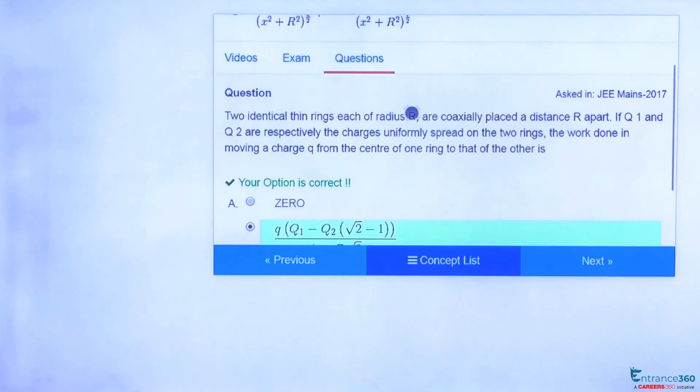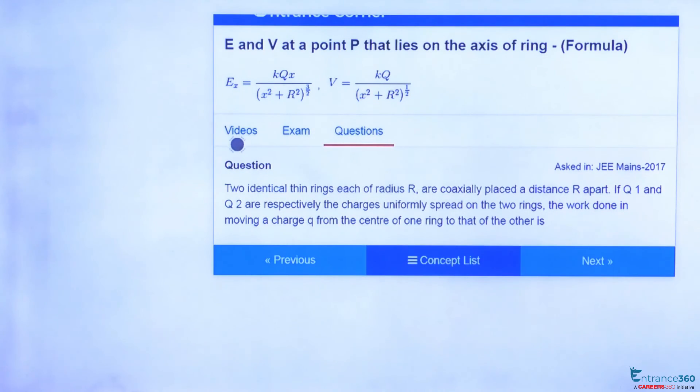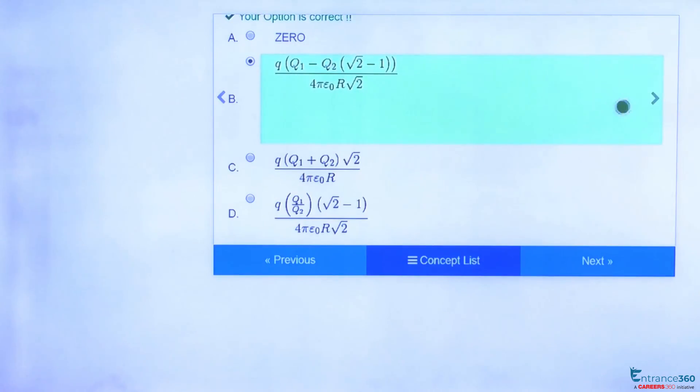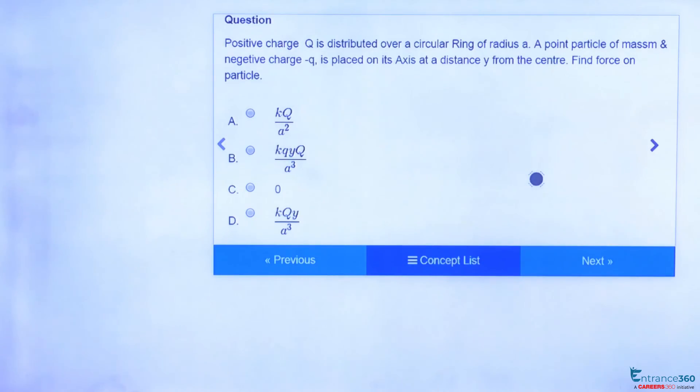To know more about this concept you can watch the video here, that is potential and electric field at a point beyond the axis of the ring. You can get more questions here just by scrolling. Thank you students.